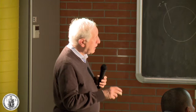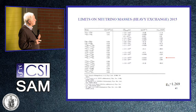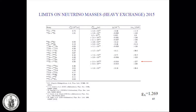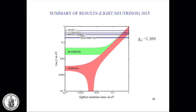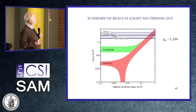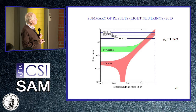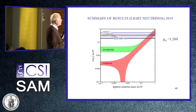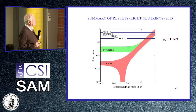We can also put limits on heavy neutrino exchange — the mass must be greater than 250 GeV, coming from KamLAND-Zen. So if there are heavy neutrinos, they must have a mass larger than that, possibly of the order of 1 TeV or larger. All of these are with no quenching. Here is a summary of results compared to the inverted and normal hierarchy, showing the average mass in electron volts as a function of the lightest neutrino mass.